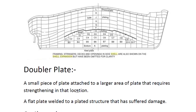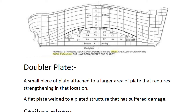To summarize, we discussed camber, tumble home, rise of the floor, aft perpendicular, forward perpendicular, shear strake, garboard strake, shell plating, doubler plate, striker plate, and shell expansion plan. We also covered flare — the outward curvature of the side shell above the waterline at the fore end, which promotes dryness. If anything was missed, please leave a comment so we can cover it in the next session. Thank you.